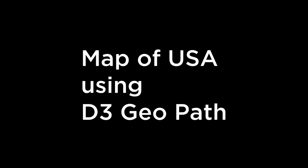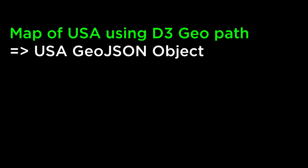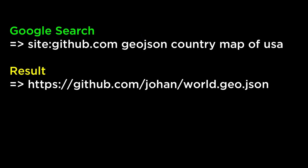Map of USA using D3 GeoPath. If we want to create a map of the USA using the D3 GeoPath function, we will need to find a USA GeoJSON object. To find the GeoJSON country map of the USA, we use Google, specifying in the search box that we want to limit our search to github.com so the GeoJSON code is easily available. The result is Johan Sundström's repository of GeoJSON maps of the world. We are using these maps for educational purposes — if you are going to use them in production, it is worth checking their licenses.